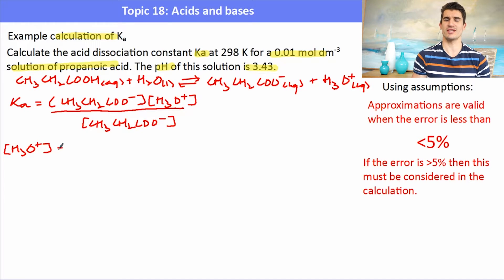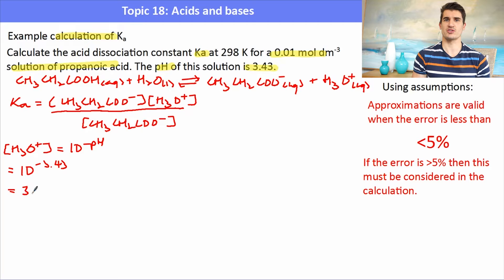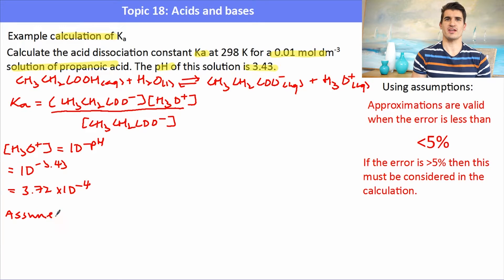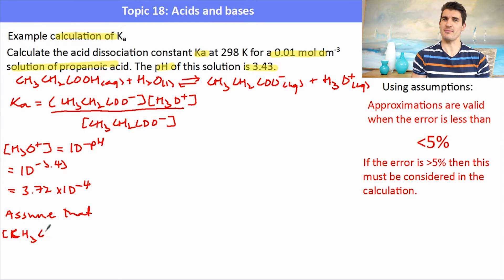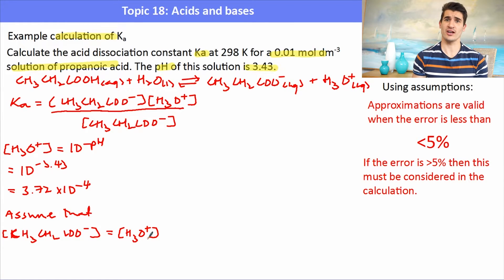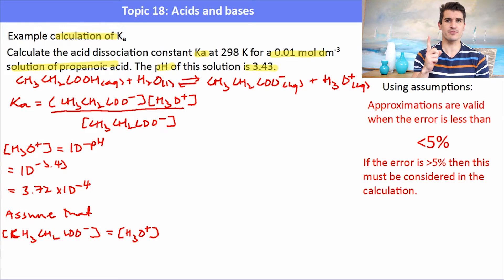The first step is to calculate the H3O+ concentration. We're given the pH, so we use the formula 10 to the minus pH, which gives us our concentration of H3O+. Because that H3O+ must have come from one propanoic acid molecule ionizing, for every H3O+ formed we also form one CH3CH2COO-. So we assume those two concentrations are equal — that's our first assumption.